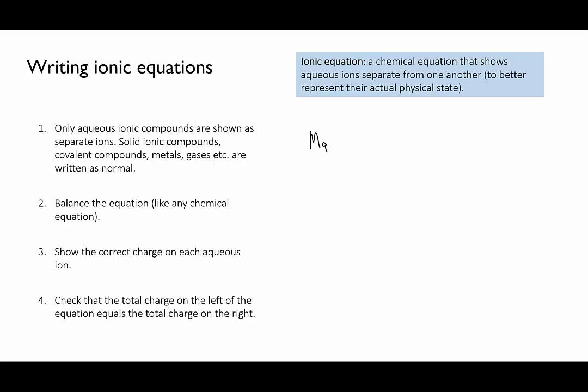So if we represent magnesium bromide dissolving, the magnesium bromide on the left is shown as the complete formula because it's a solid and the ions are bonded together, while on the right of the equation, the ions are written separately because here we're representing the fact that they've dissolved and have separated into solution.